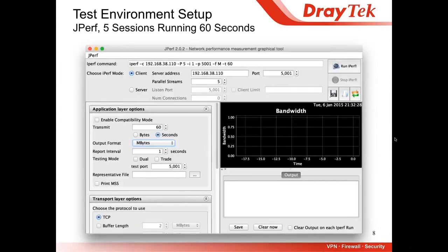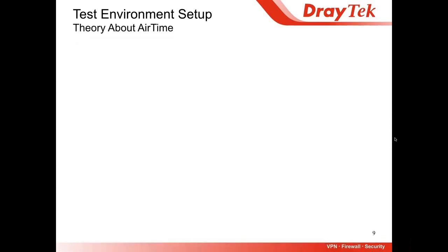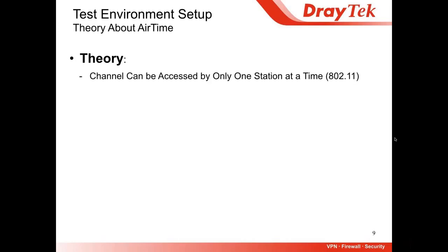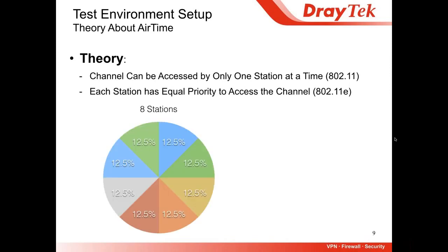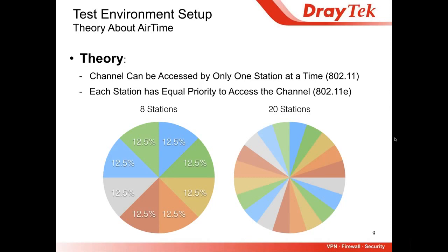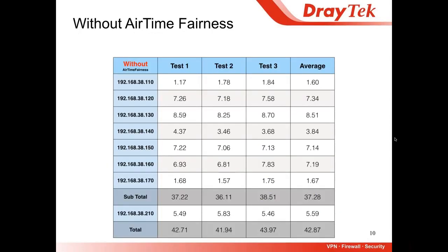This is the Jperf tool we used. You can see we run five stations for 60 seconds on each of them. Before we show the test results, I want to talk about the theory of airtime. Theory number one: each channel can be accessed by only one station at a time, and each station has equal priority to access the channel. So if the theory works, in our case with eight stations, they should all use the airtime equally — each getting the same percentage of time.